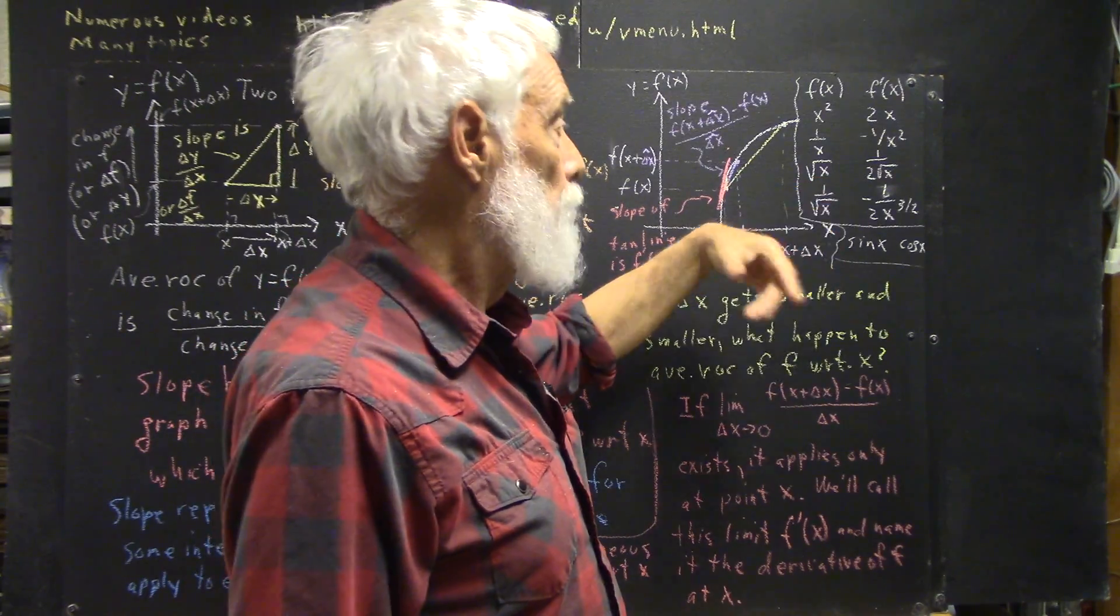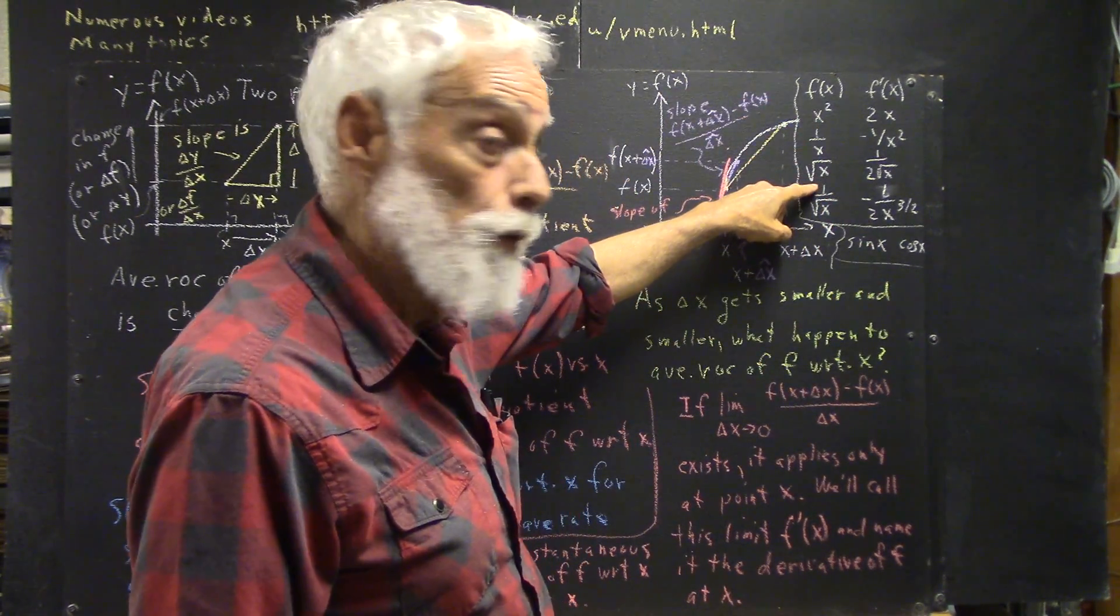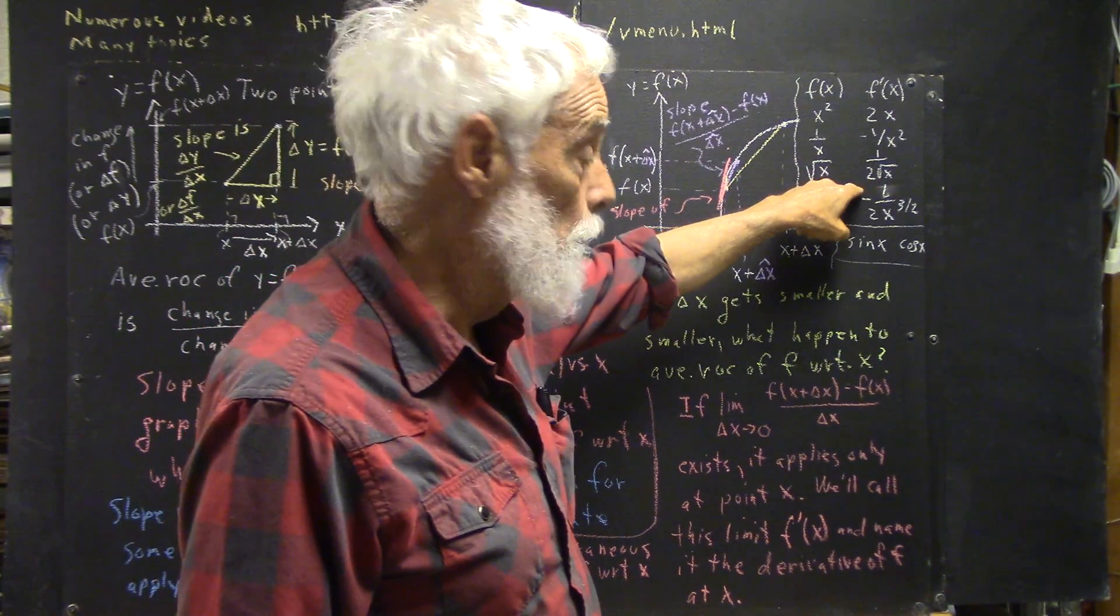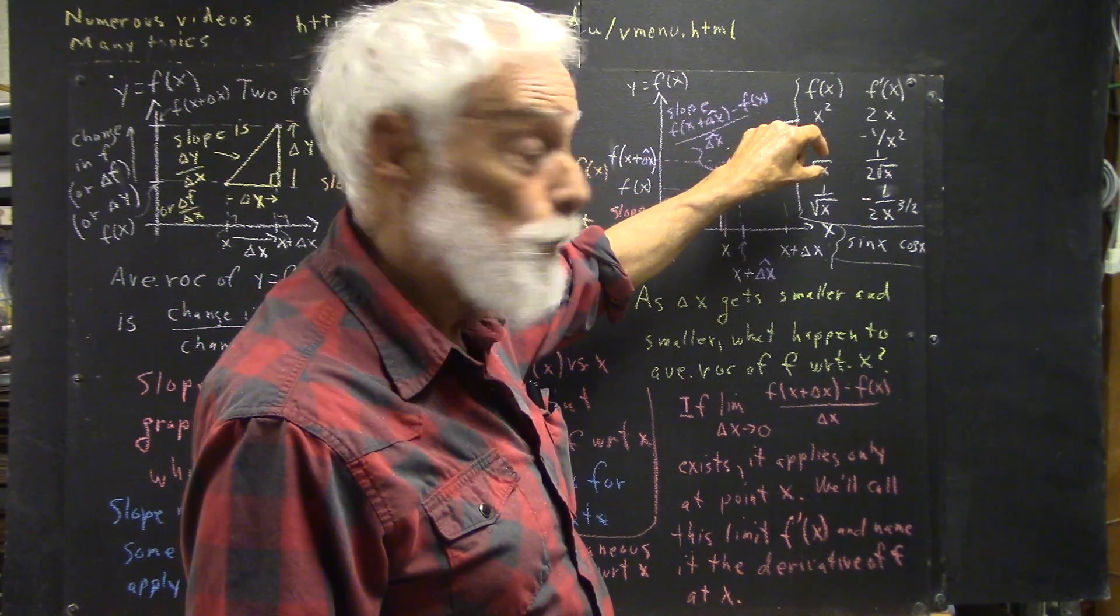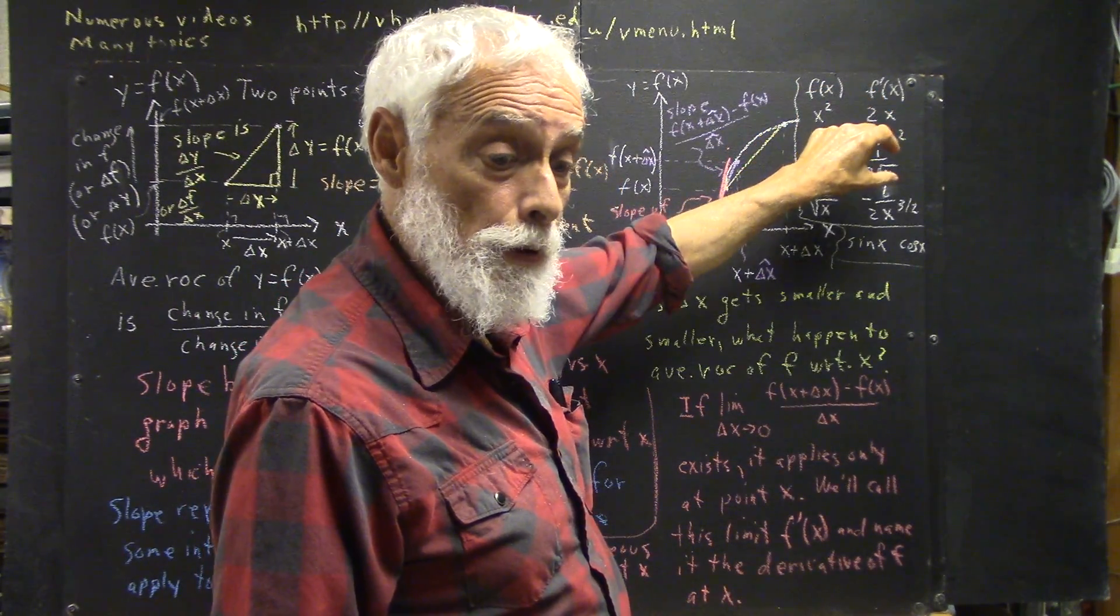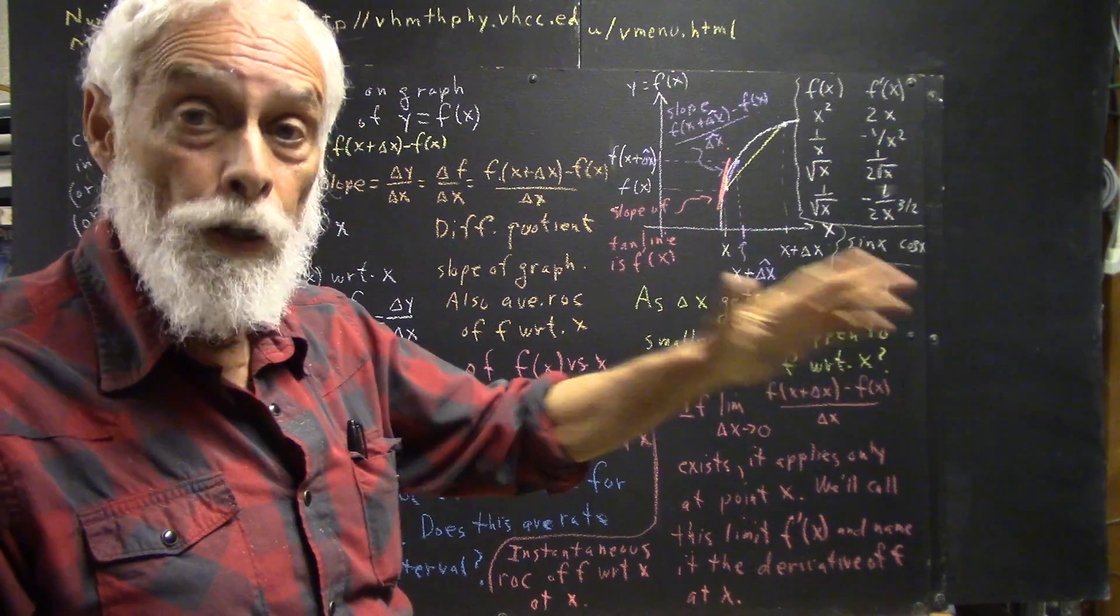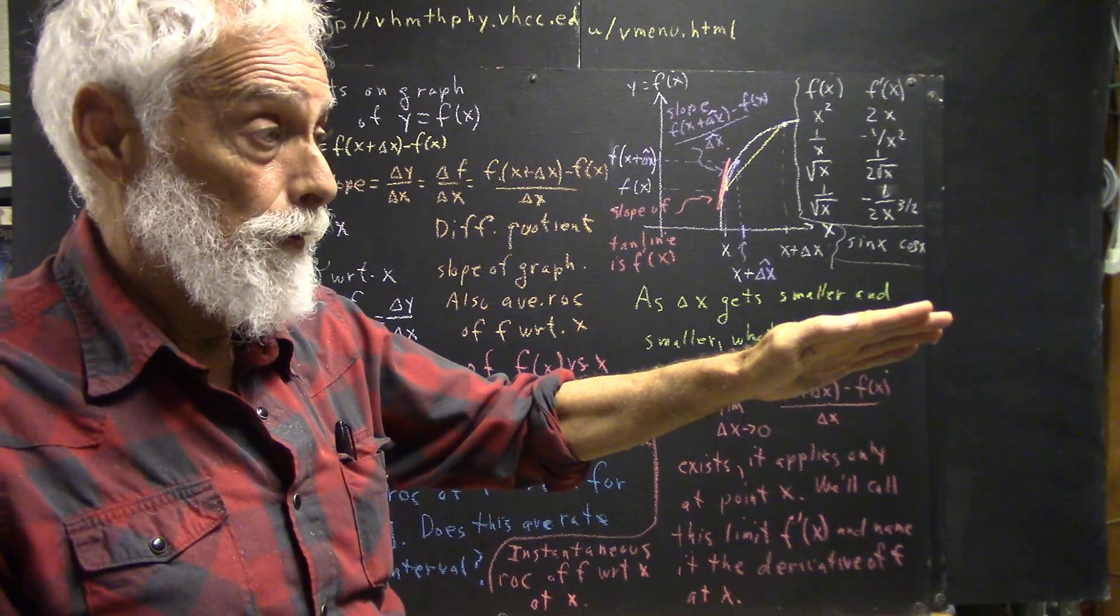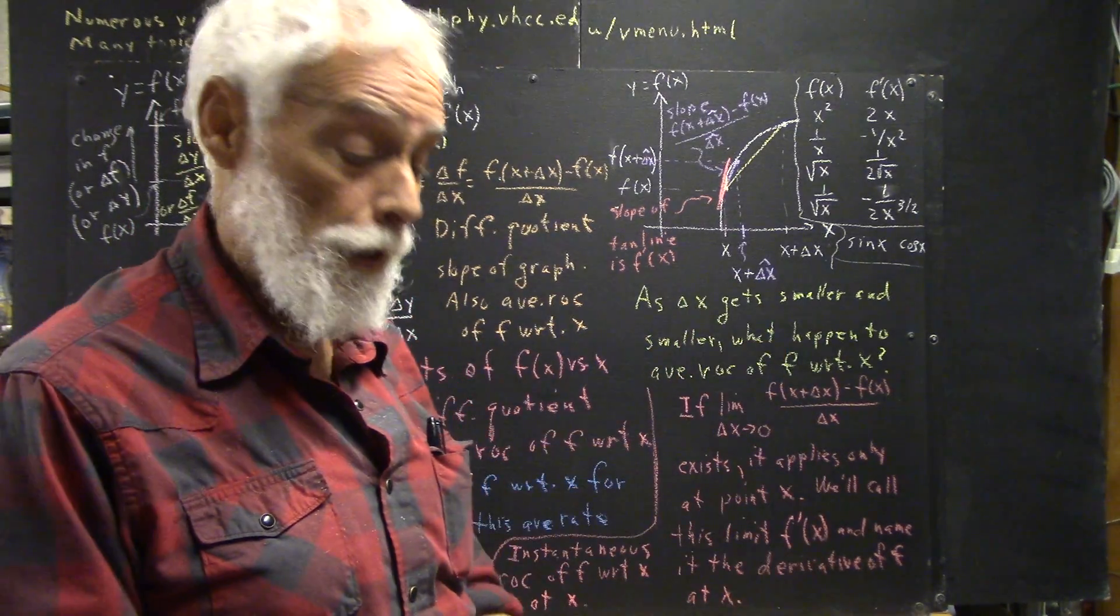So, we know now that the tangent line at the x equals 4 point of this graph is going to have a slope of 1 fourth. We know the point, we know the coordinates of the point, and we know the slope. If we know the coordinates of a point and the slope of a straight line through that point, then we can easily find the equation of the line, and that would be the equation of the tangent line.